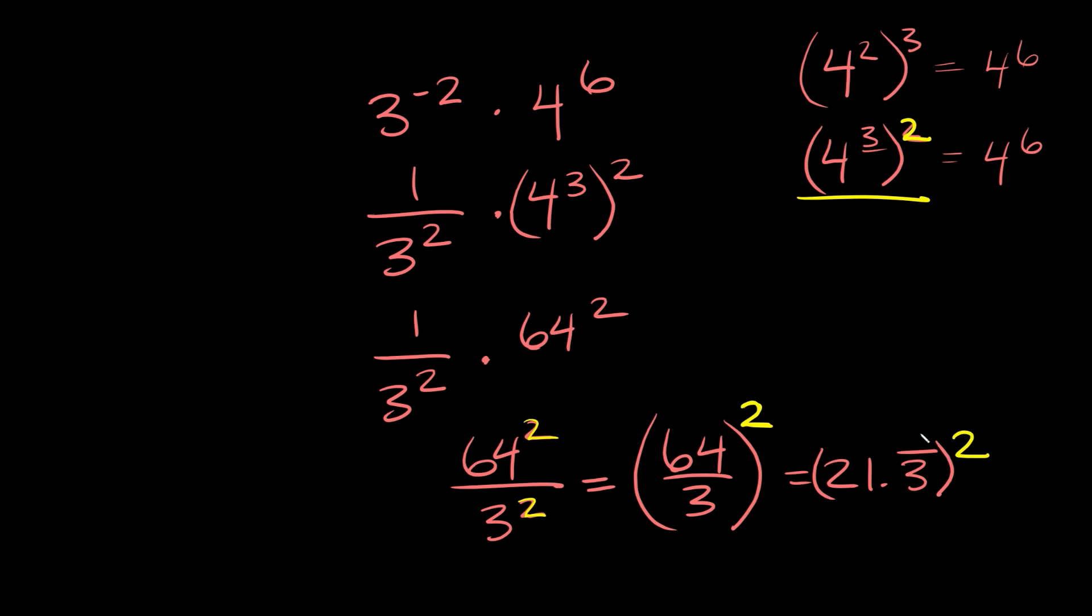And you could simplify this a little bit more. If you plug this into a calculator, you're going to get 455.1 repeating. Or another way of saying this - 0.111111, that's the same thing as 1 ninth. So we could just say 455 and 1 ninth. Not the prettiest answer, but there it is.